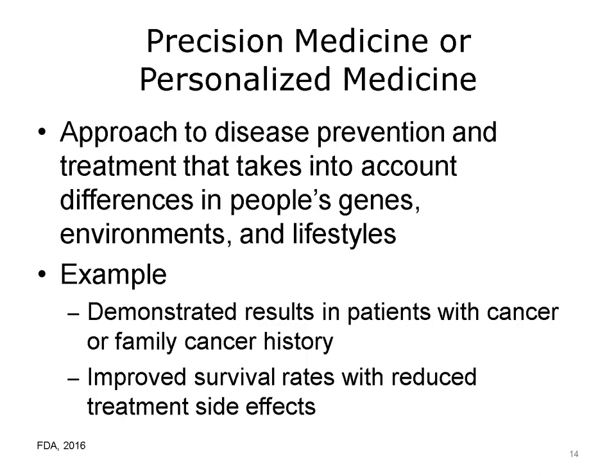Most medical treatments are designed for the average patient as a one-size-fits-all approach, which is successful for some patients but not for others. Precision medicine, sometimes known as personalized medicine, is an innovative approach to disease prevention and treatment that takes into account differences in people's genes, environments, and lifestyles. Advances in precision medicine have already led to powerful new discoveries and several new FDA-approved treatments tailored to specific characteristics of individuals, such as a person's genetic makeup or the genetic profile of an individual's tumor. For example, patients with a variety of cancers routinely undergo molecular testing as part of patient care, enabling physicians to select treatments that improve chances of survival and reduce exposure to adverse effects.